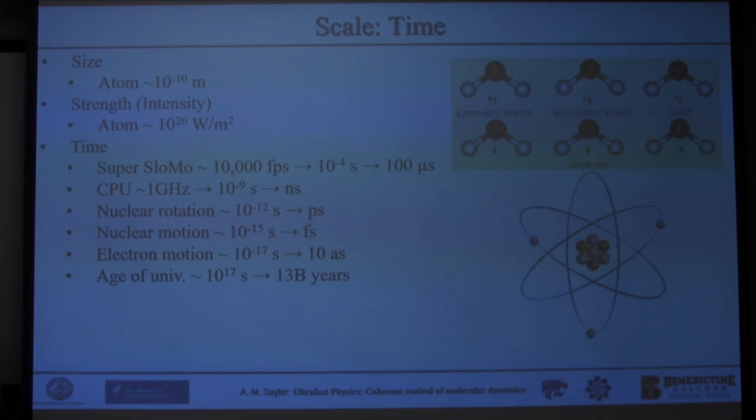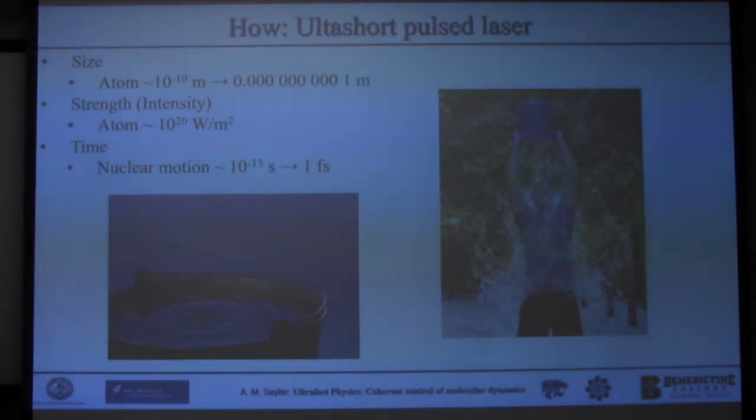Just for reference, the standard model right now says the age of the universe is around 10 to the 17th seconds old. That's 13 billion years. So again, just for reference, if we take one second to the age of the universe, this is the same as one attosecond to one second. So this is the reduction in timescale we need to see this motion.